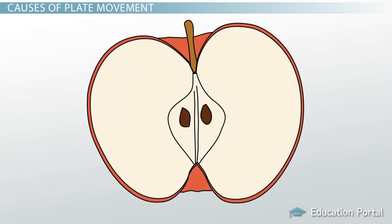Let's use an apple as an example. An apple has three main layers to it, the peel, the fruit, and the core.